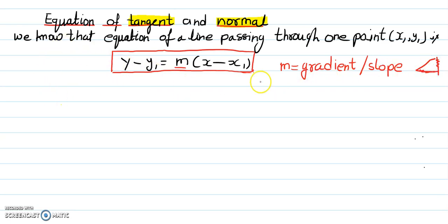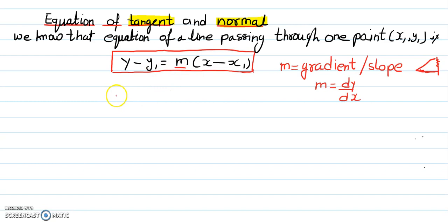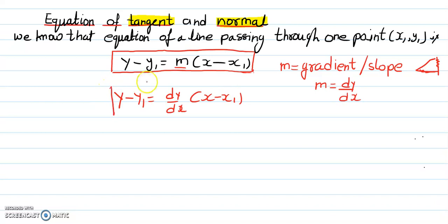Today we are doing differentiation and this is part of differentiation. m is basically rise over fall, that is rise on y-axis, that is dy over dx. So if we replace m with dy by dx, then we get y minus y1 equals dy by dx times x minus x1. This will give you the equation of tangent.